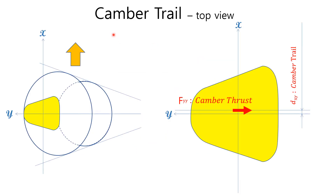This slide explains camber trail. Let's think about the front left tire with negative camber. As described in the picture, camber thrust is acting laterally ahead of the wheel center along the x-axis in the horizontal plane when the tire is rolling. In the right picture, the distance d sub xr is called camber trail. The direction of camber thrust with negative camber is the same as the lateral force due to side slip angle.